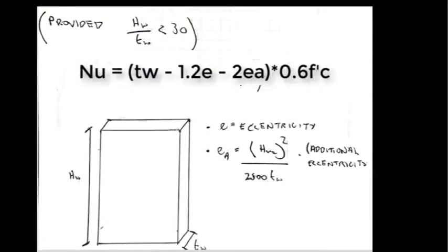Here we have Section 11.5, which will give you the actual capacity for the wall. So we have the equation NU equals the thickness of the wall minus 1.2E, which is the eccentricity in Clause 11.5.2, which we'll get into soon, minus 2EA, which is an additional eccentricity taken as the height of the wall squared divided by 2,500 times the thickness of the wall times 0.6, and obviously a function of the strength of concrete.